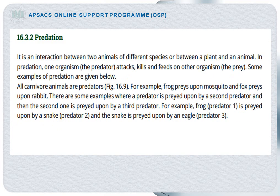The second type of interaction is predation. Predation can be defined as an interaction between two animals of different species, or between a plant and an animal. In predation, we have two organisms: one is the predator and the other is the prey. The organism that attacks or kills the other animal is known as the predator, and the organism that is killed is known as the prey.